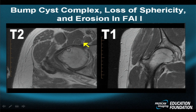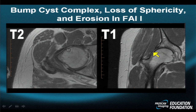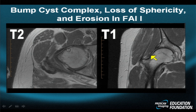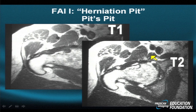The coronal projection demonstrates the loss of tapering of the neck. Here's a little bit of tapering; here's no tapering. When that tapering becomes very unexaggerated or convex outward, we sometimes refer to that as the pistol grip deformity. There's another example of a subtle bump-cyst complex.